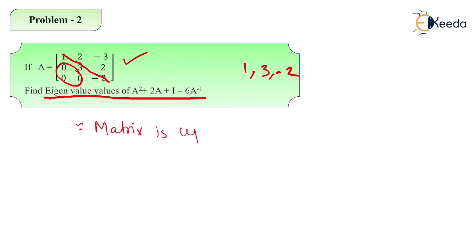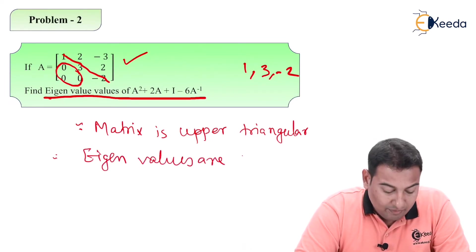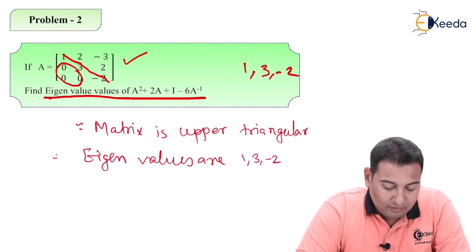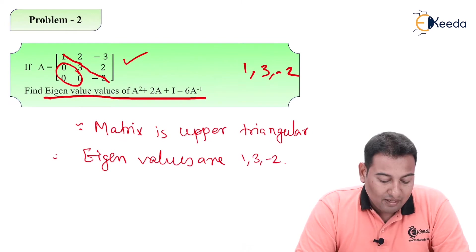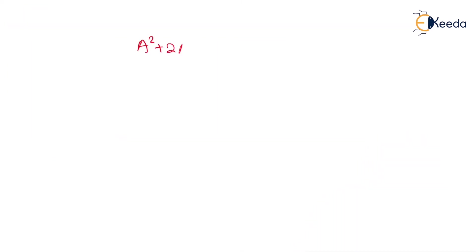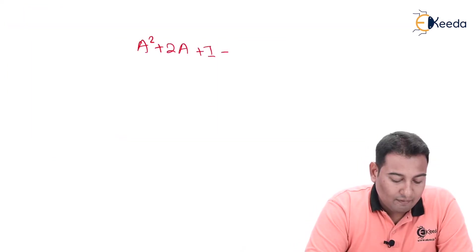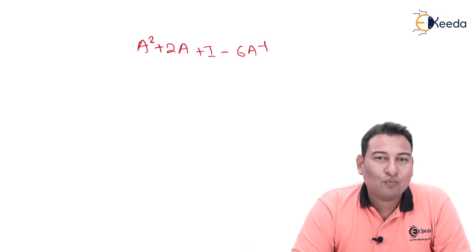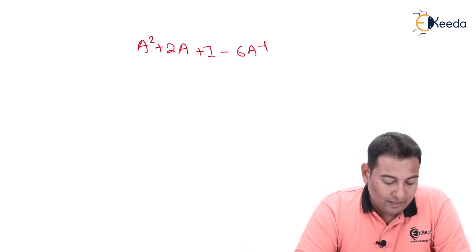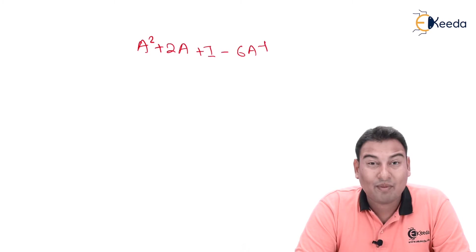Since the matrix is upper triangular, the eigenvalues are the same as the diagonal elements: 1, 3, and minus 2. Now, our aim is to find the eigenvalues of A squared plus 2A plus I minus 6A inverse. It is not asked to find the eigenvalue of A itself, but of the expression A² + 2A + I − 6A⁻¹.